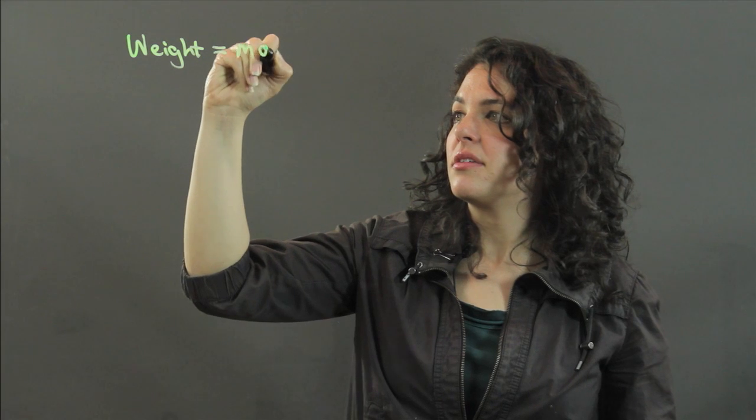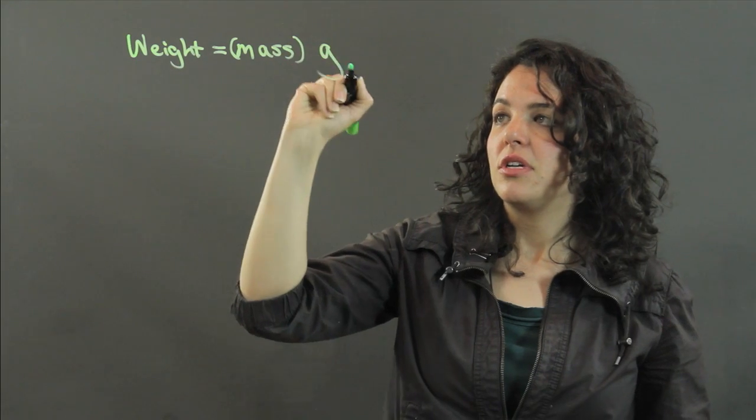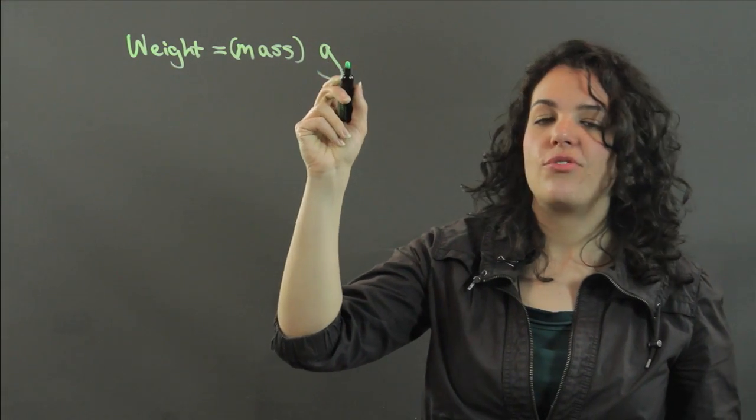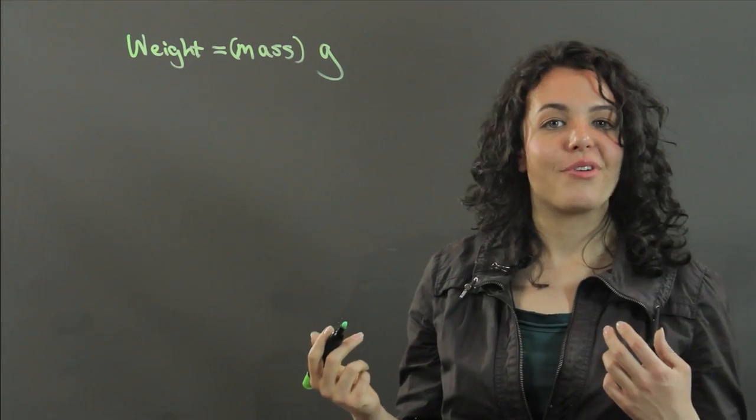Both weight and mass are very closely related. In fact, you can calculate the weight of an object by multiplying mass times g, where g is the gravitational acceleration, or the acceleration due to gravity.